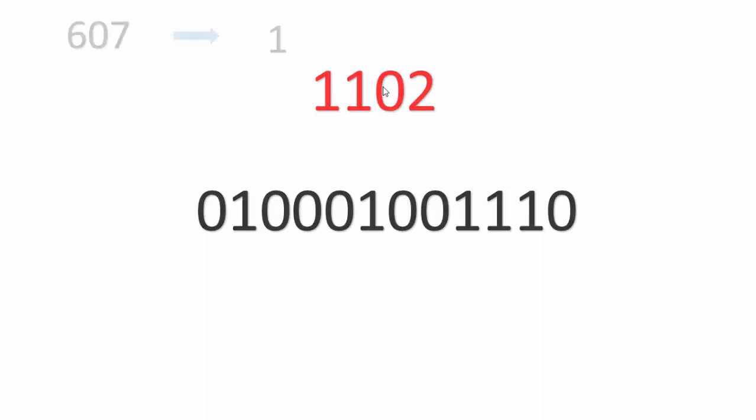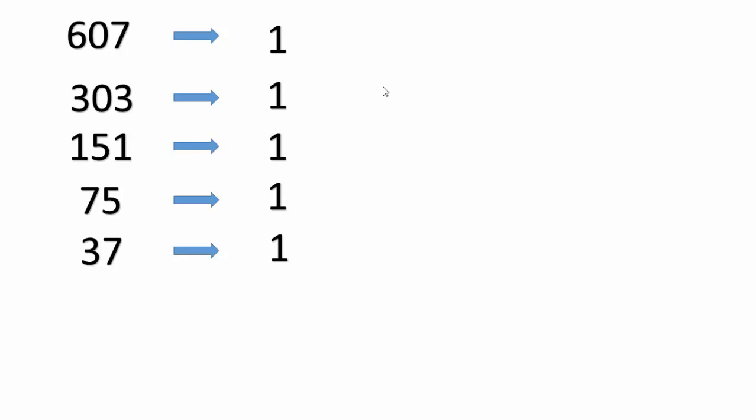Let us consider one more example: 607. We just have to judge whether the number is even or odd. As 607 is odd, we write down 1, subtract 1 and divide by 2 to get 303. Again odd — subtract 1 to get 302, divide by 2 to get 151, which is again odd. Write down 1, subtract 1 to get 150, divide by 2 to get 75. 75 is odd — write down 1, subtract 1 to get 74, divide by 2 to get 37. 37 is odd again and we continue, yielding 18.